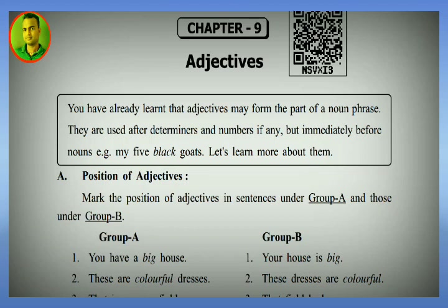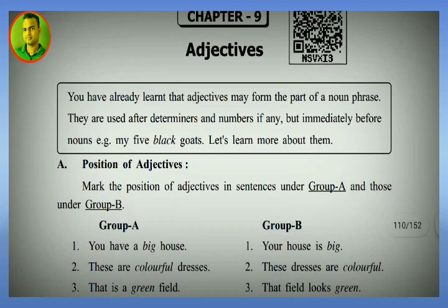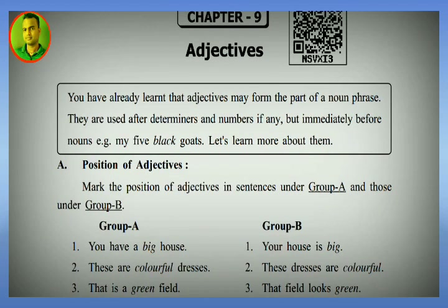In a noun phrase, after the determiner comes the adjective, then the number, then the noun. For example: 'My five black goats.' Here 'my' is the possessive determiner, 'five' is the numeral, 'black' is the adjective, and 'goats' is the noun. Let's learn more about them.